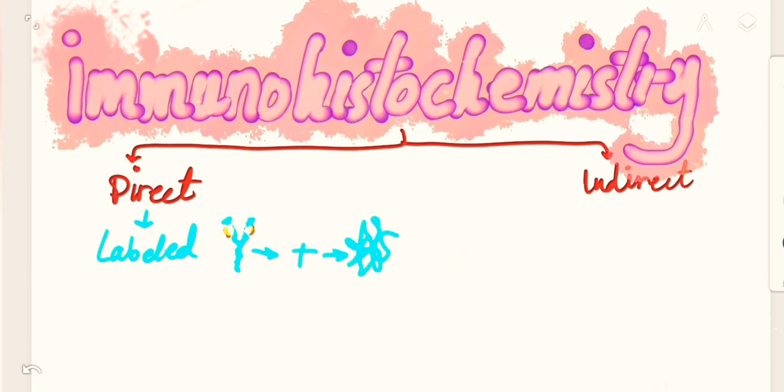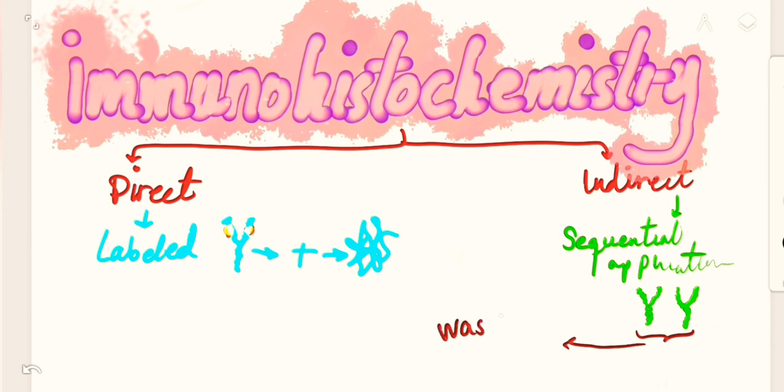The indirect method is a method of sequential application of two different antibodies. These antibodies are being different from one another. It is going to go through a washing step or many washing steps.